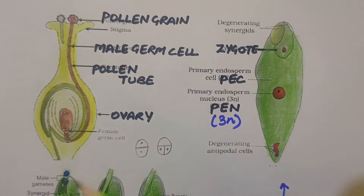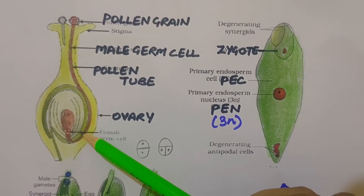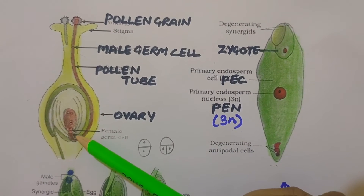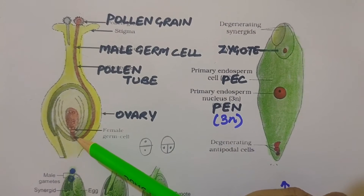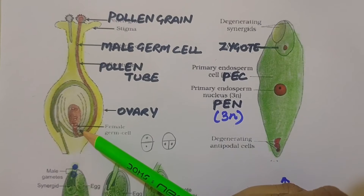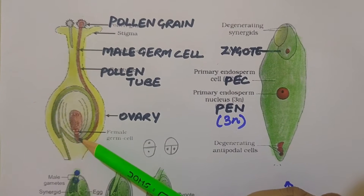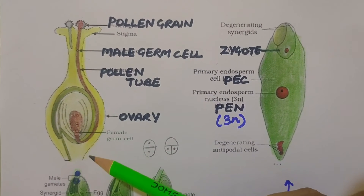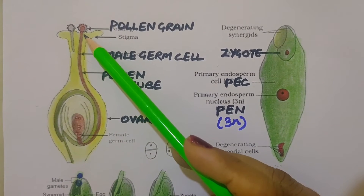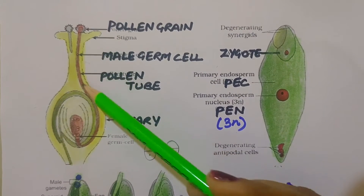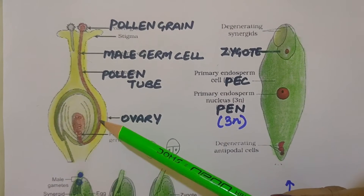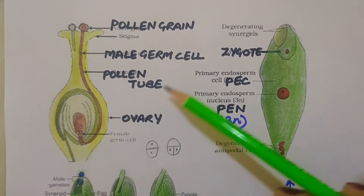The pollen tube, after reaching the ovary, enters the ovule through the micropyle and then enters one of the synergids through the filiform apparatus. The filiform apparatus present at the micropylar part of the synergids guides the entry of the pollen tube. All these events from pollen deposition on the stigma until the pollen tube enters the ovule are together referred to as pollen-pistil interaction.